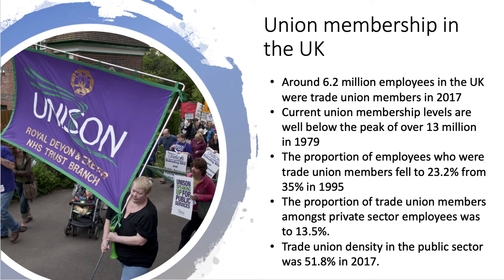In the UK there has been a significant fall in trade union membership. Just over 6 million people in work are members of a union — well below the 13 million members in 1979. Union membership is now below 25%, at 23%, compared to a third in 1995 and over 50% in 1979. In the private sector only 13.5% of employees are union members, whereas in the public sector it's just under 52%.